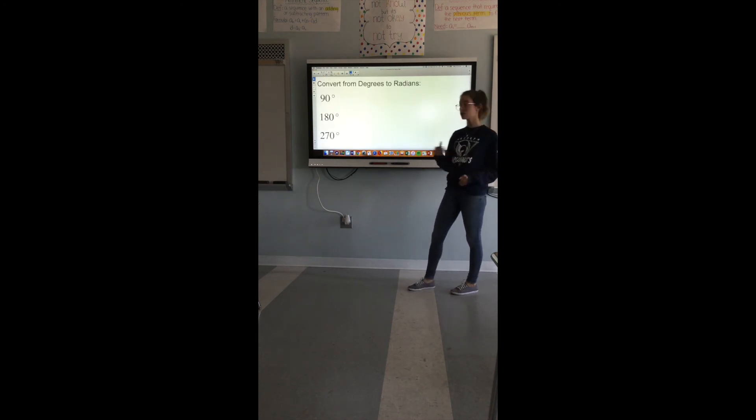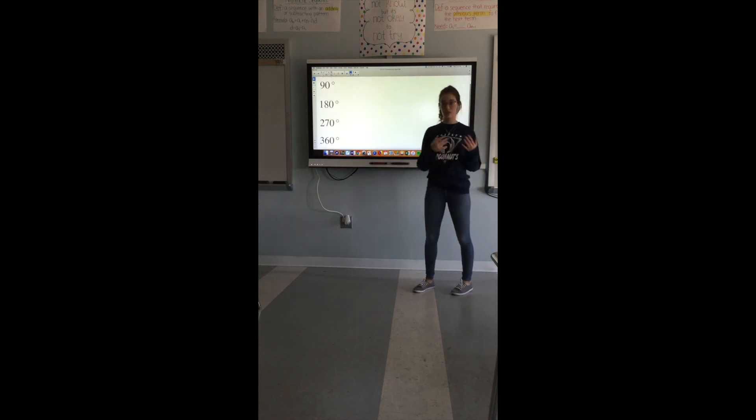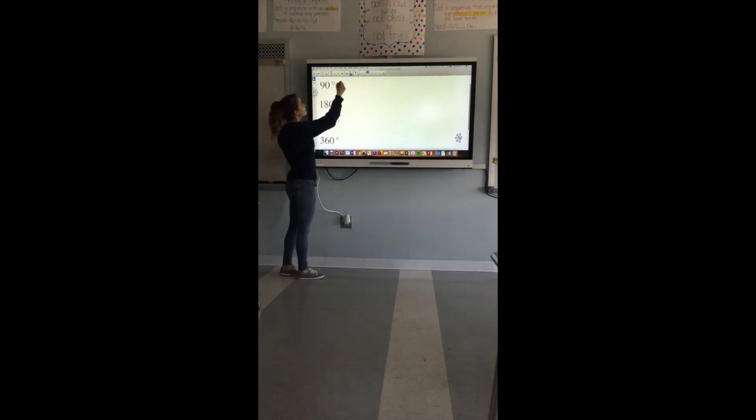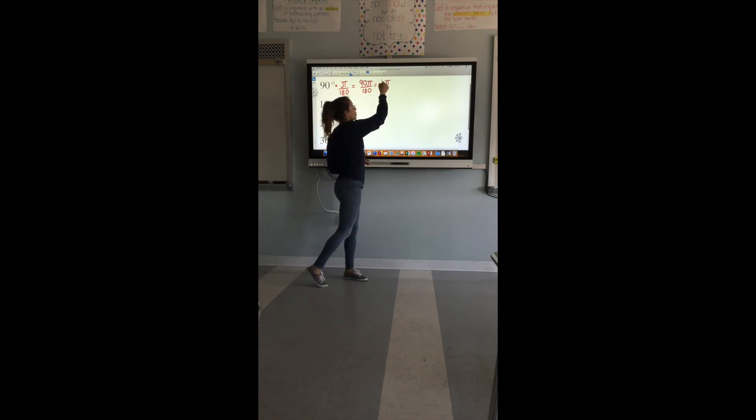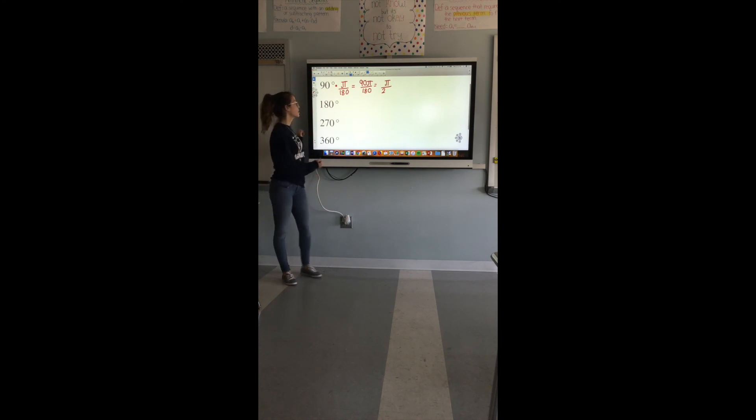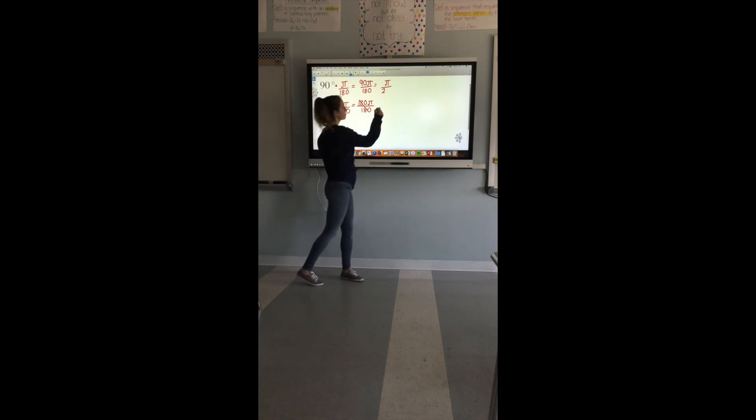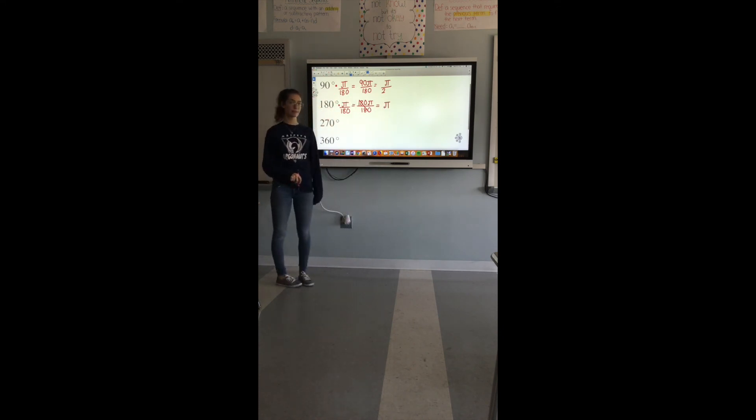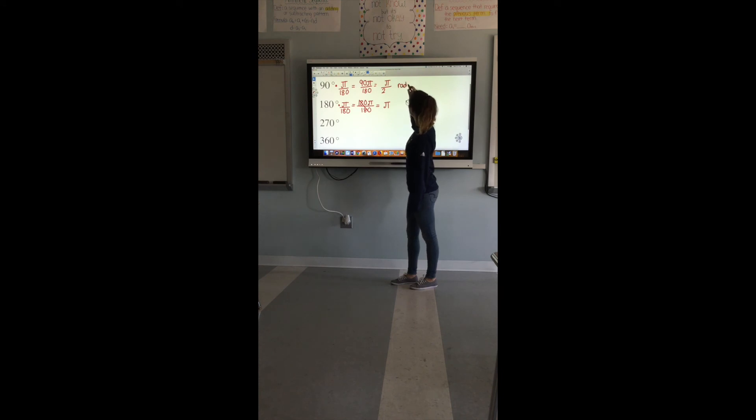All right so converting these four degrees into radians, these are your most important. For 90 you would multiply this by pi over 180 and this would give you 90 pi over 180 which is the same thing as 1 pi over 2. We really don't need that 1 there so it's the same as pi over 2. For 180 we multiply this by pi over 180, when we do that we get 180 pi over 180 those cross out and that's equal to just pi. These are all radians.